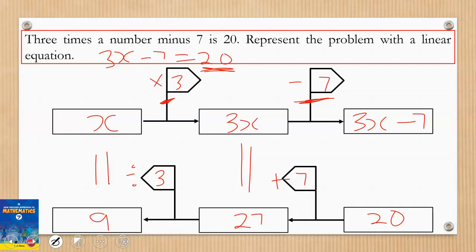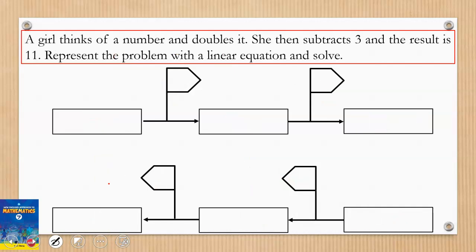Let's take another example: a girl thinks of a number and doubles it. She then subtracts 3 and the result is 11. Represent the problem with a linear equation and solve it. A girl thinks of a number, let's call it n. She doubles the number giving 2n, then subtracts 3.